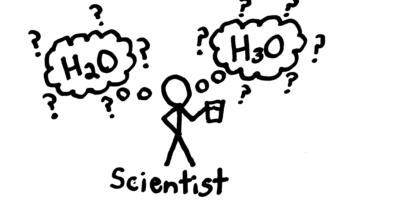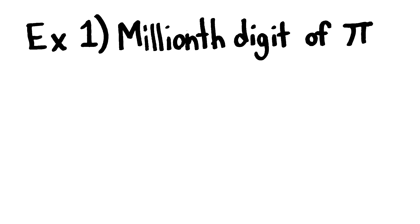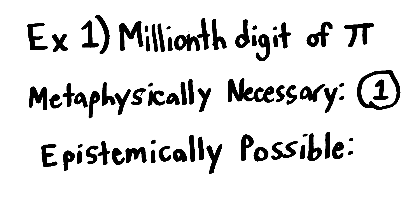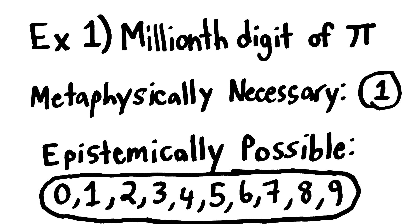To further clarify this idea, let's look at some more examples. The millionth digit of pi is identical to 1. But if you haven't calculated that far out, then it's epistemically possible that the millionth digit of pi is some other number.